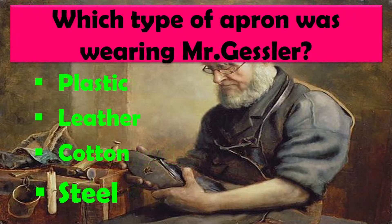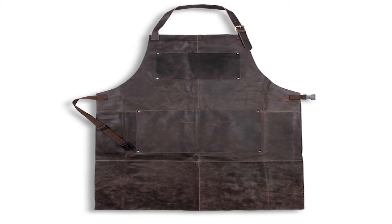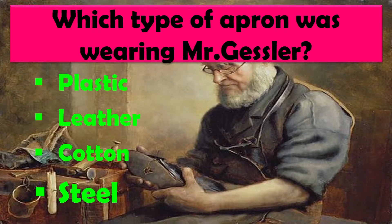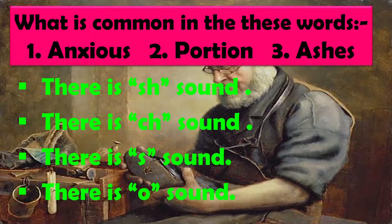What type of apron was Mr. Gessler wearing? Mr. Gessler ne kis tarah ka apron pehna hua tha? Options: Plastic, leather, cotton, steel. Right answer is leather.